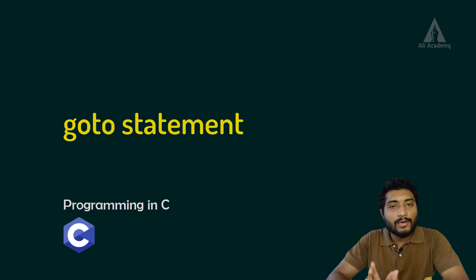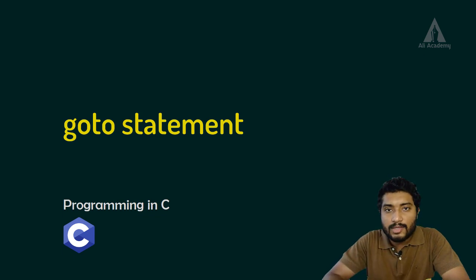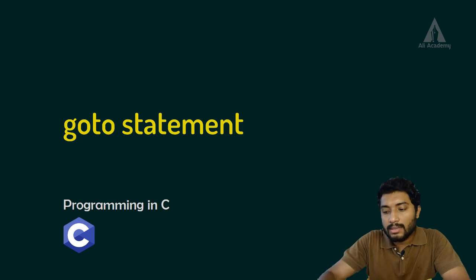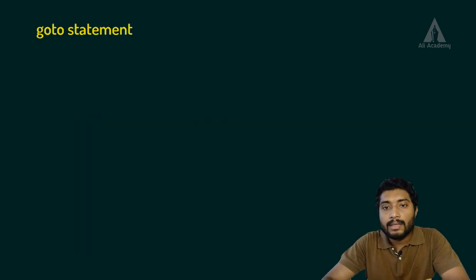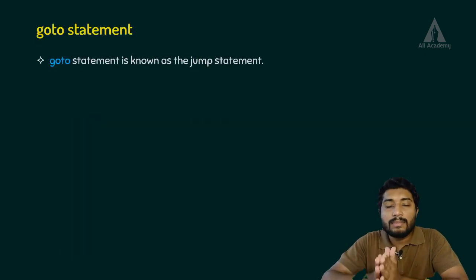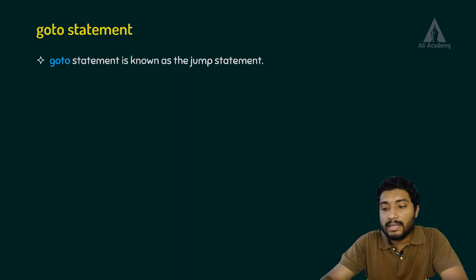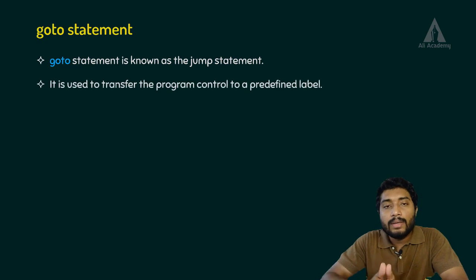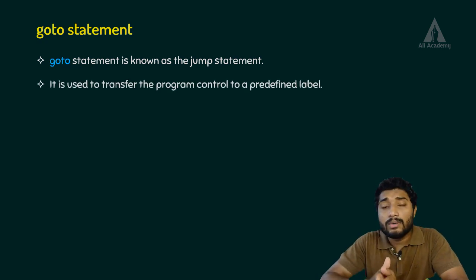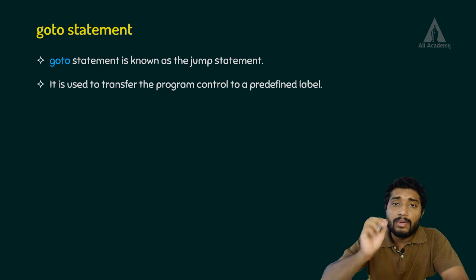Hi, in this lecture we are going to discuss the goto statement in C programming language. We can also call it a jump statement. It is used to transfer the program control to a predefined label.